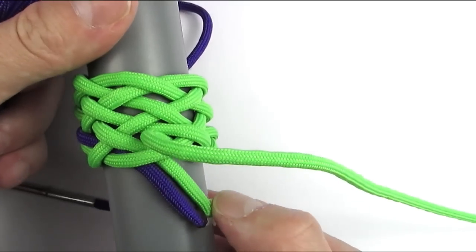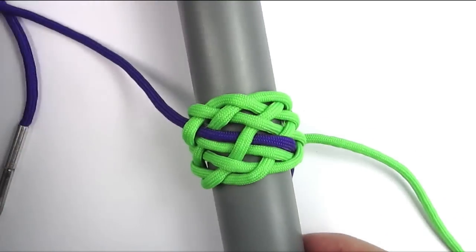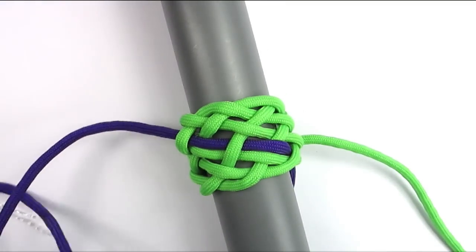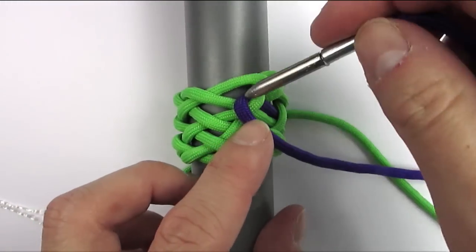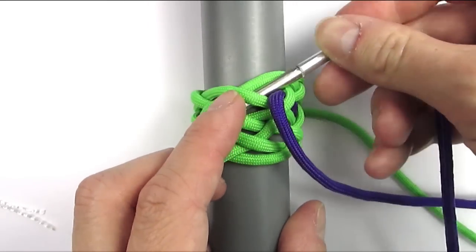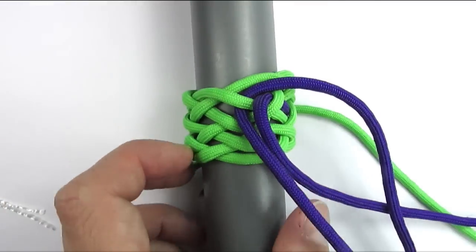We're going to start on the left side of our standing end and we're going to start our sequence of tying by going under the first cord, then over, then under, over and under.